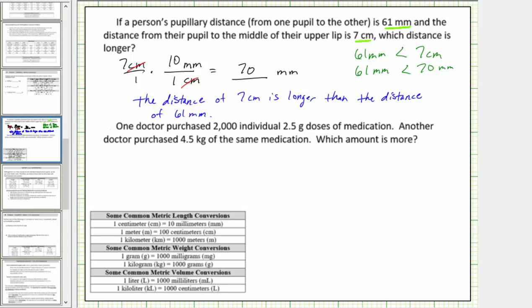Let's look at the second question. One doctor purchased two thousand individual 2.5-gram doses of medication. Another doctor purchased 4.5 kilograms of the same medication. Which amount is more? To answer this question, we need to compare two thousand 2.5-gram doses to four point five kilograms. Two thousand individual 2.5-gram doses would be two thousand times two point five grams, which equals five thousand grams. We want to compare this amount to four point five kilograms.